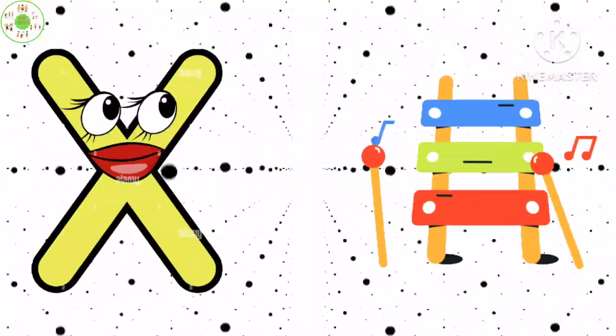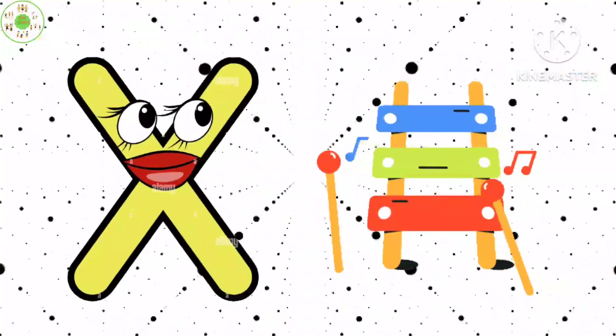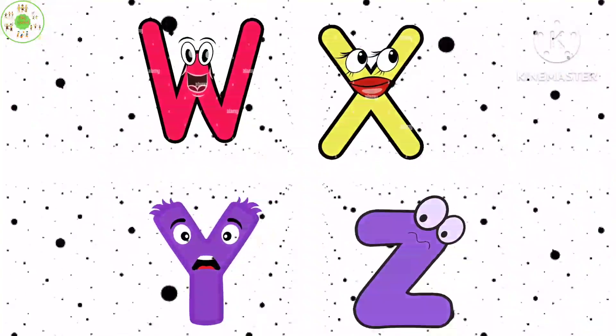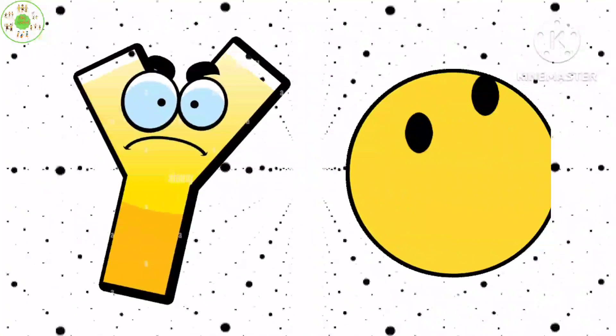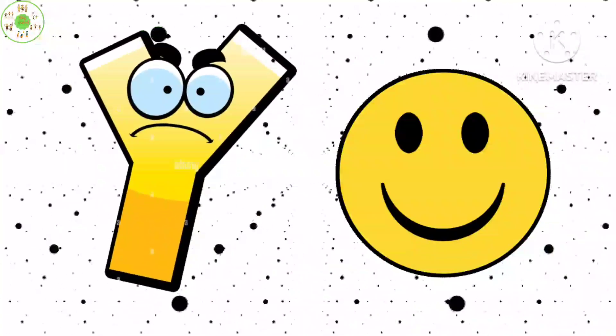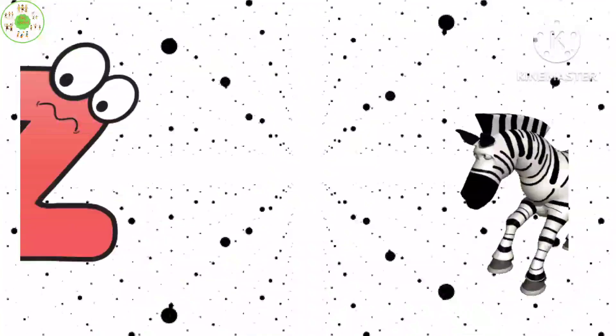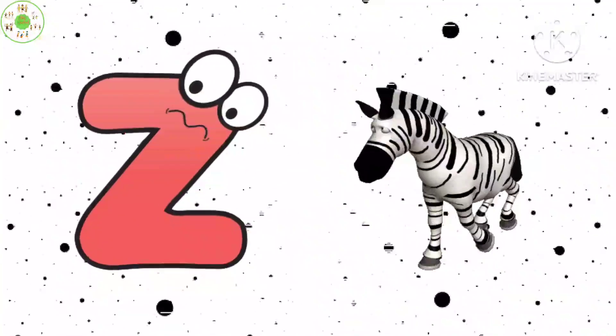X is for Xylophone, X-X-Xylophone. Y is for Yellow, Y-Y-Yellow. Z is for Zebra, Z-Z-Zebra.